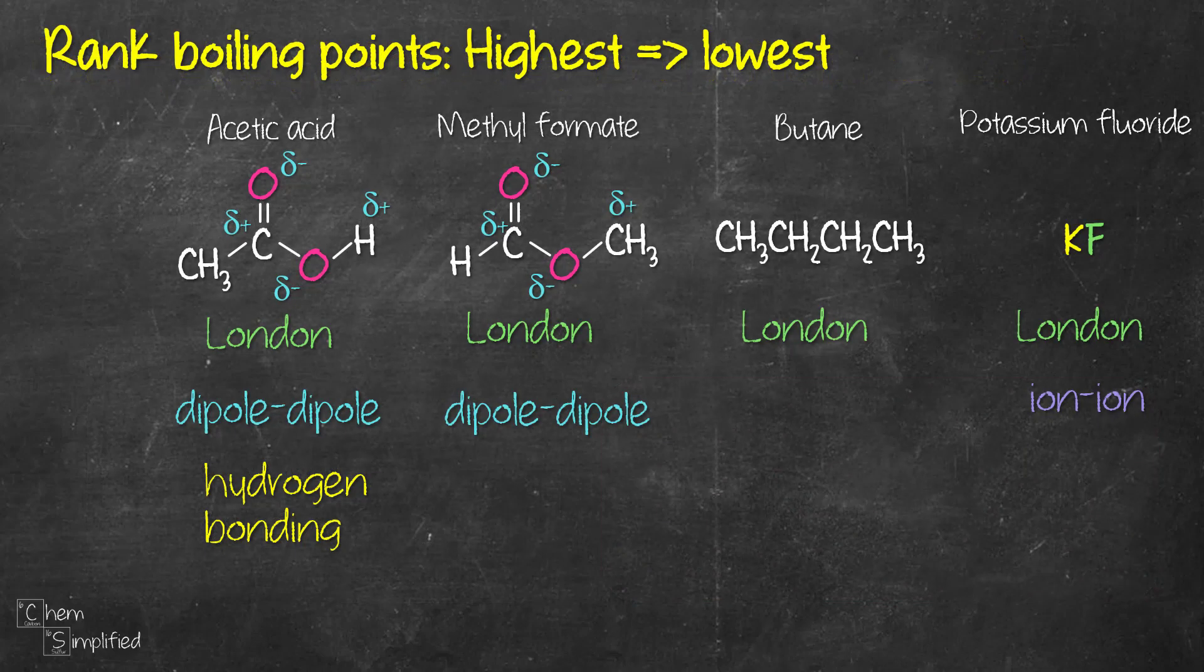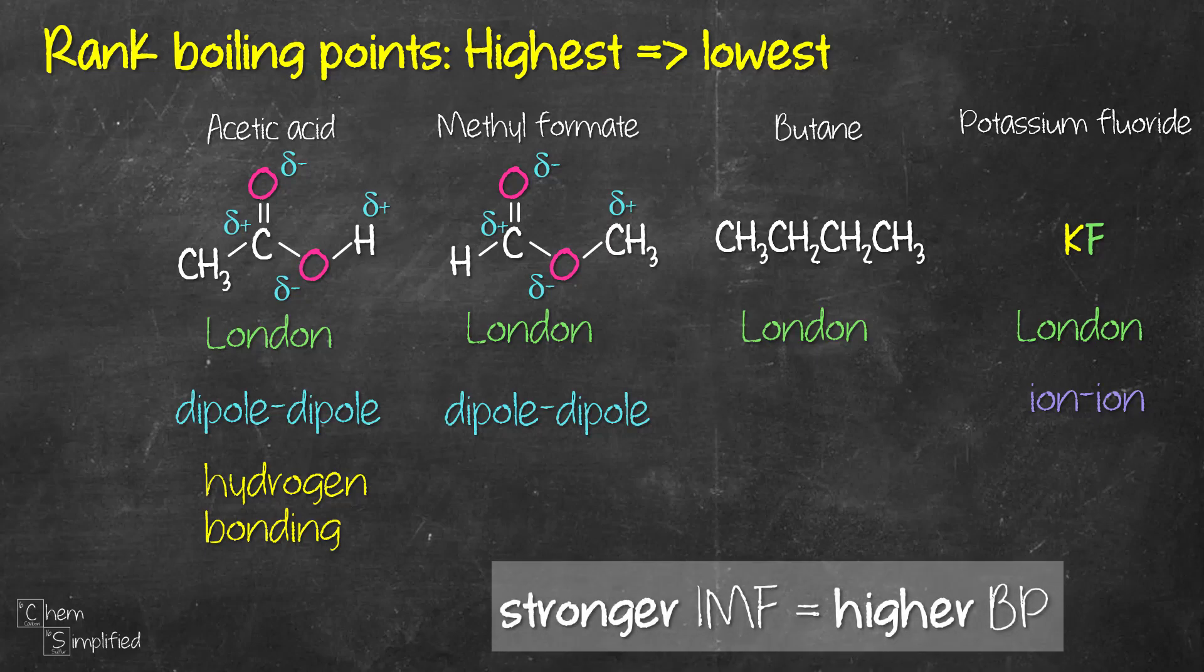So back to our four compounds. Now that we've figured out the intermolecular forces present in each of them, we can now rank the boiling points from highest to the lowest. We do that by looking at the strength of the intermolecular forces. Here's the connection. The stronger the intermolecular forces, the more energy is required to overcome the forces. And that translates to higher boiling point. So in short, stronger IMF equals higher boiling point. IMF is short for intermolecular force.